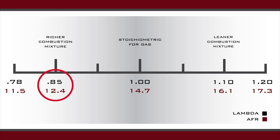If you're tuning a boosted car, those tend to like air-fuel ratios around 11 to 11.5 — sometimes richer, sometimes leaner, depending on how much boost you're running in your application. A nice common number is 11.5, and as you can see on the graph, the lambda number for 11.5 is 0.78.